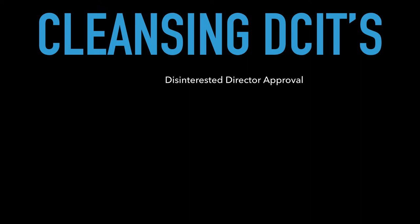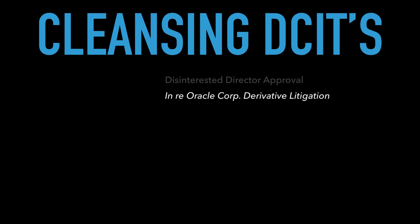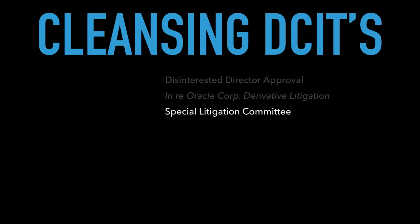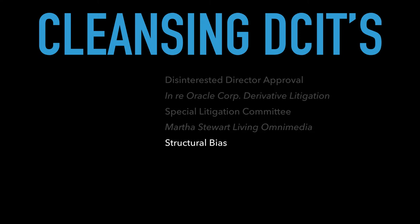Our first approach, as we discussed in the last video, is getting disinterested director approval — but what does that mean? We're going to learn that in In re Oracle Corp derivative litigation. One way to have disinterested director approval is by setting up a special litigation committee comprised entirely of independent directors. One concern about those committees is that directors are all kind of part of one socioeconomic class. They know each other, they like each other, and it might be a structural bias issue. That came up in the Martha Stewart Living Omnimedia case.